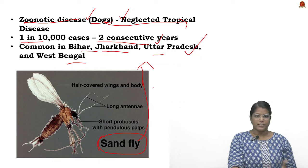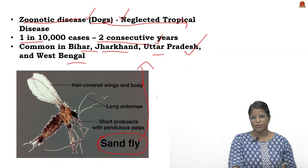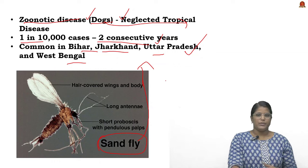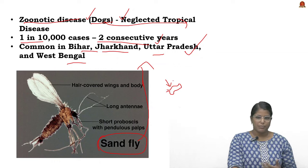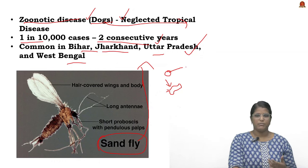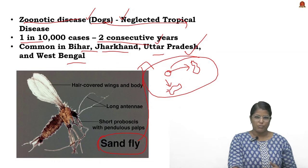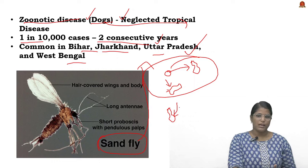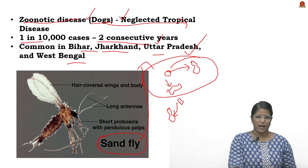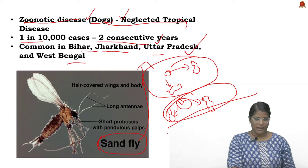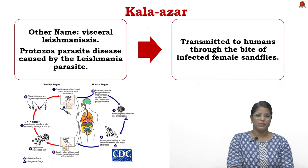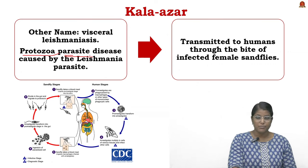Sandflies, similar to mosquitoes, feed on human blood as well as dogs' blood. The transmission cycle works like this: when a sandfly bites a dog, it picks up the pathogen; when this sandfly then bites a healthy person, it gets transmitted from dog to person. In the second cycle, when a sandfly bites an infected person, the sandfly gets infected and transmits the disease to another human.